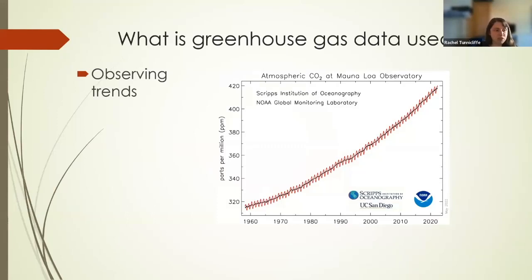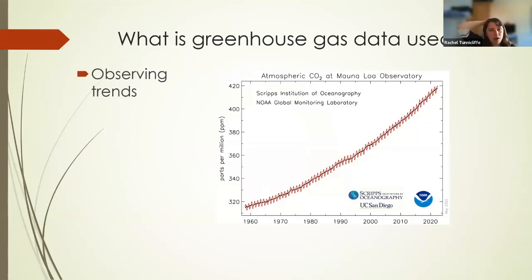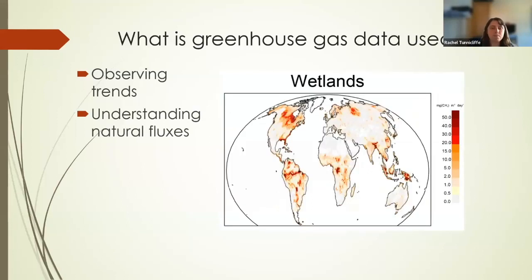I'll give a bit of background on the motivations for this project and what we use greenhouse gas measurements for. The most obvious example is this sort of plot showing the rise in carbon dioxide — in parts per million — from the Mauna Loa Observatory, part of the NOAA Global Monitoring Laboratory. You can see this very steady, and perhaps even increasing, rise in CO2 in recent years.